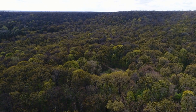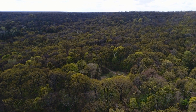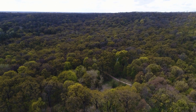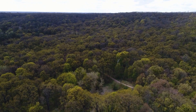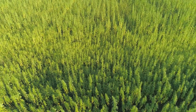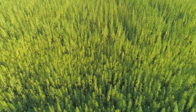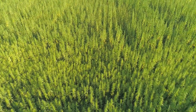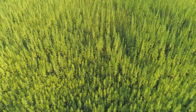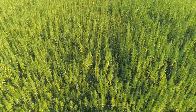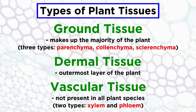Vascular tissue is what allowed the ancestors of modern plants to abandon their reliance on living in or near water sources, meaning that we can now find plants in almost every environment on earth, regardless of how dry they seem. We will discuss these aspects of plant evolution a bit later in the series. Vascular tissue can be further broken down into two types, xylem and phloem.